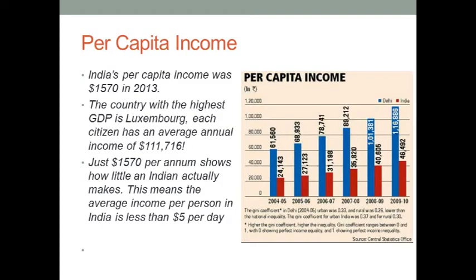India's per capita income was $1,570 in 2013. The country with the highest per capita income is Luxembourg, where each citizen has an average annual income of $1.11 lakh dollars. America's per capita income is $54,597. Per capita income represents how much a citizen of a country earns in a year. Just $1,570 per annum shows how little an average Indian actually makes — less than $5 per day.